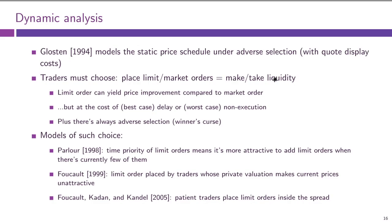In our Glosten model, the roles were fixed — we had limit traders and market traders. But in reality, the roles are not actually fixed. So the main trade-off in this choice between limit orders and market orders is as follows.